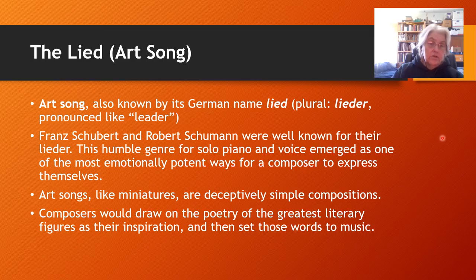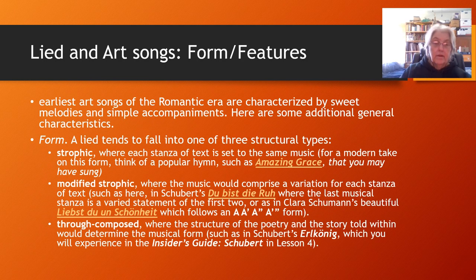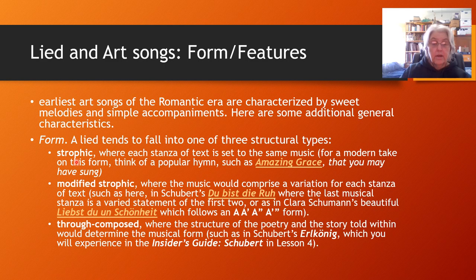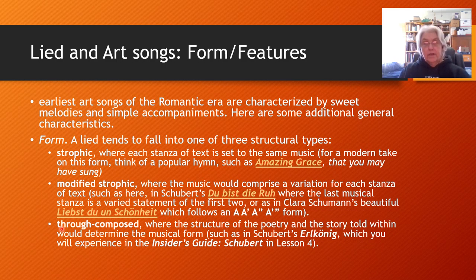Another type of music at the time was called the art song, or in German, the Lied — more than one song is Lieder. Schubert and Schumann were both well known for their Lieder — beautiful types of works for piano and solo voice. Some of the earliest art songs have very simple melodies and accompaniments and were usually structured as strophic (like a hymn, where each verse of the poem is set to the same music), modified strophic (where the music might have some variation to accommodate the text), or through-composed (where it went from beginning to end trying to show the text and its relation to the music). Click on these links to hear some examples.